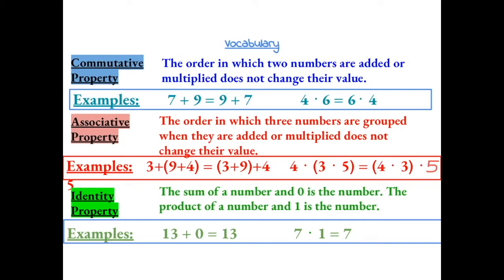The next property is the associative property. This says that the order in which three numbers are grouped with parentheses when they are added or multiplied does not change their value. For example, 3 plus (9 plus 4) is the same as (3 plus 9) plus 4. This property also applies for multiplication: 4 times (3 times 5) equals (4 times 3) times 5. This rule does not apply to subtraction or division.